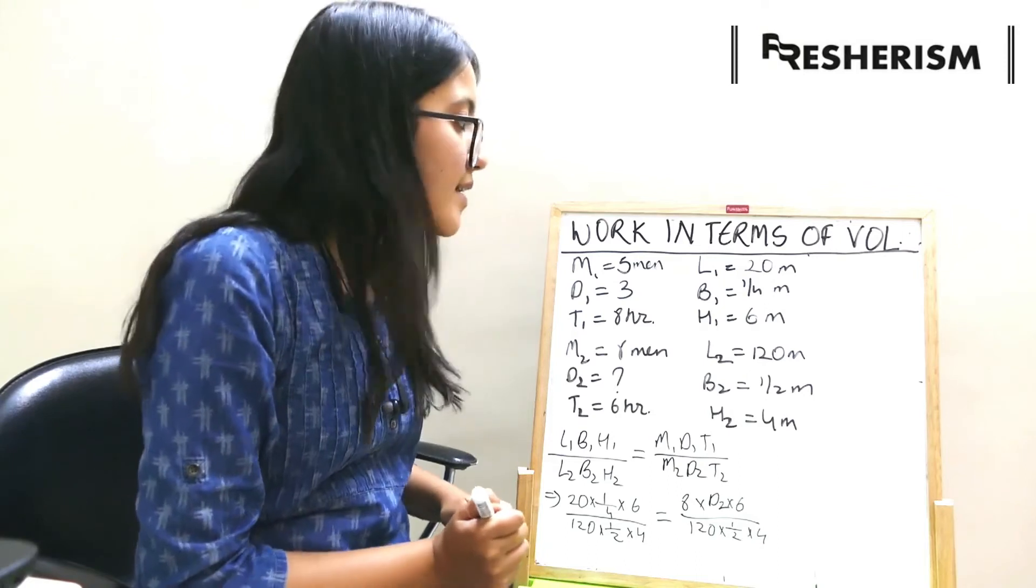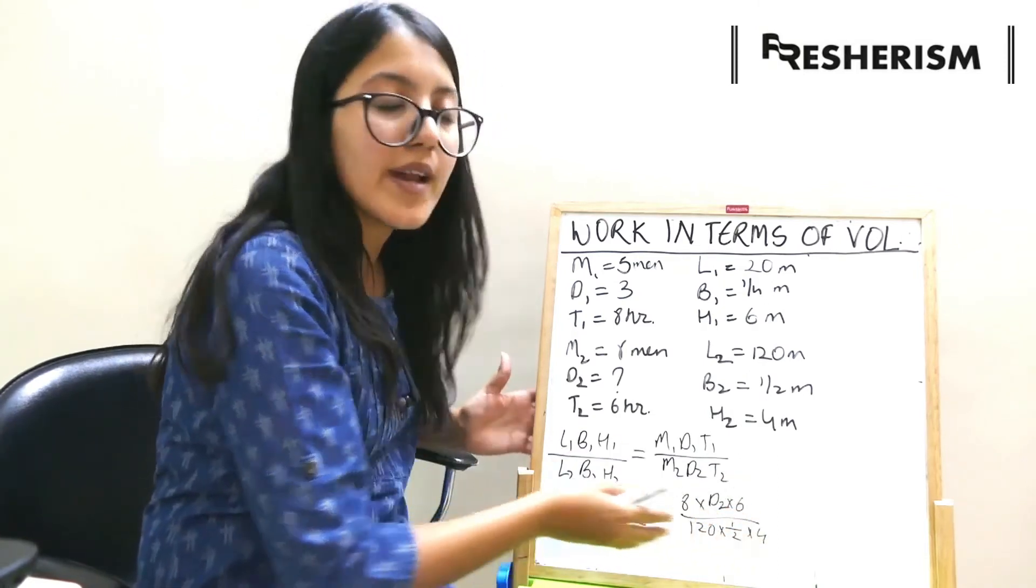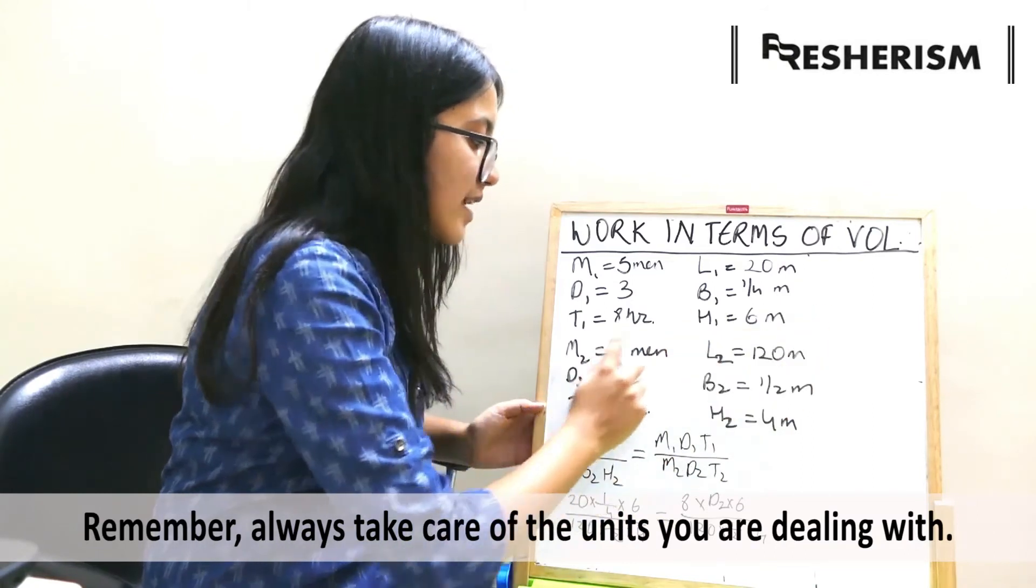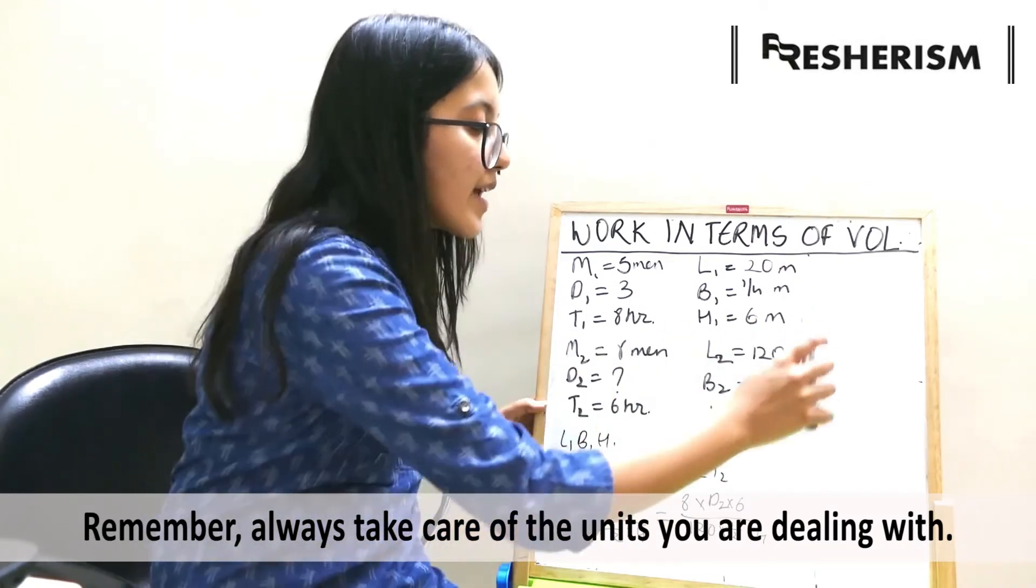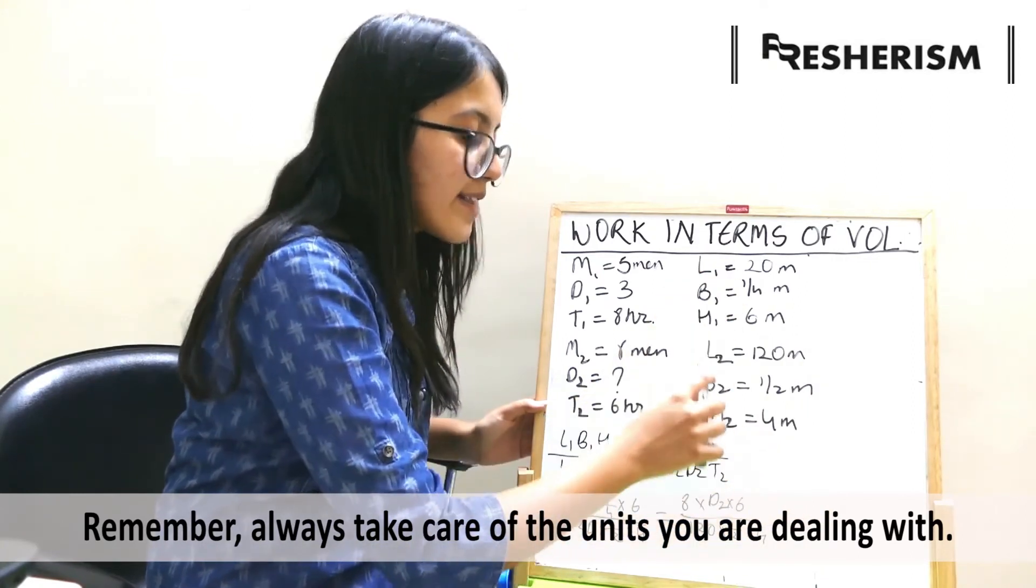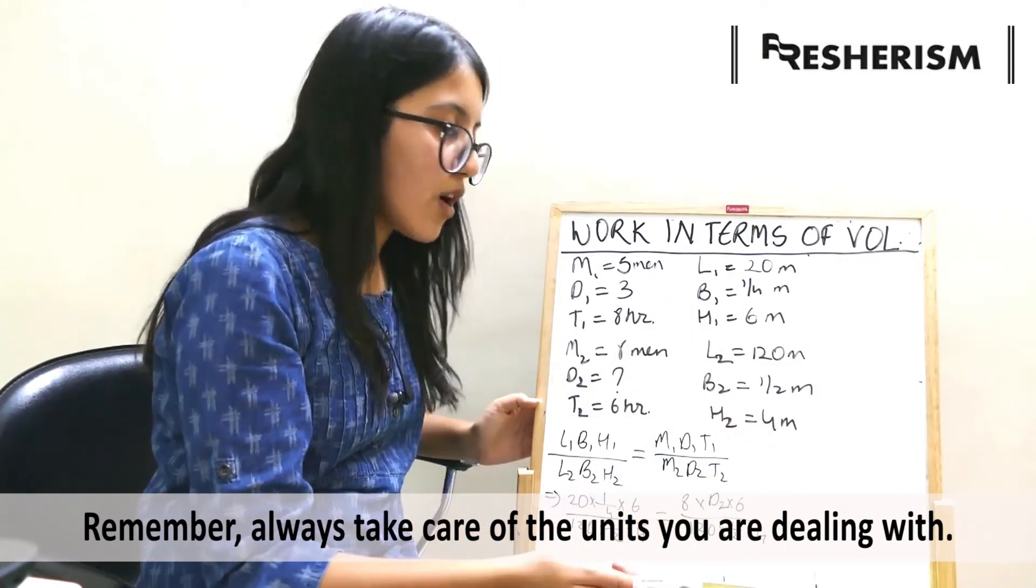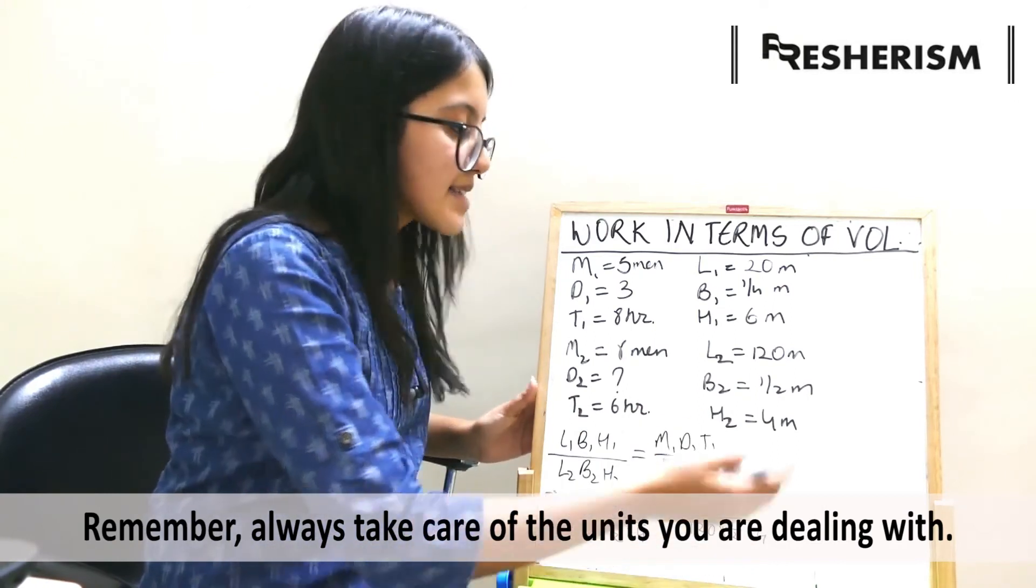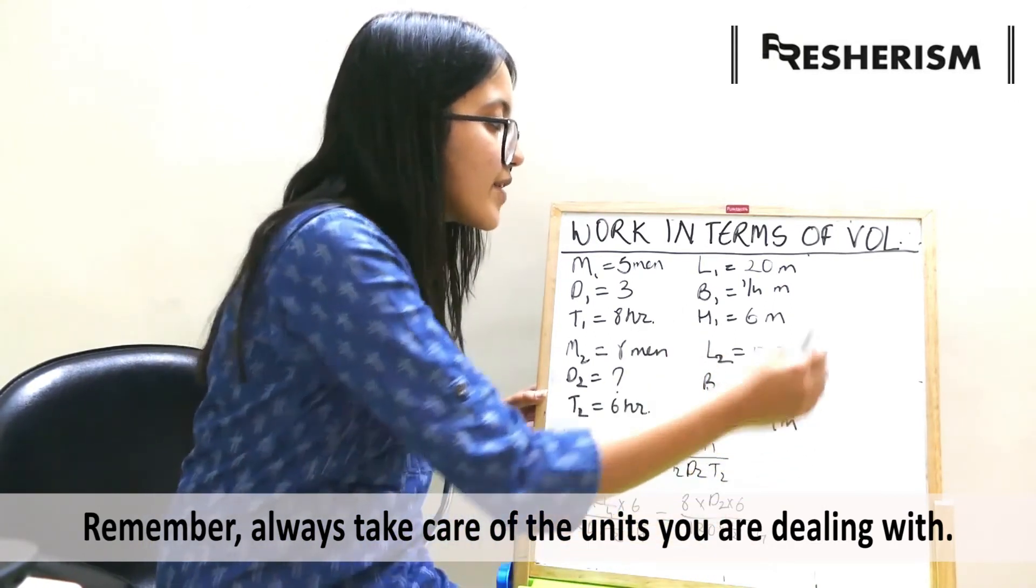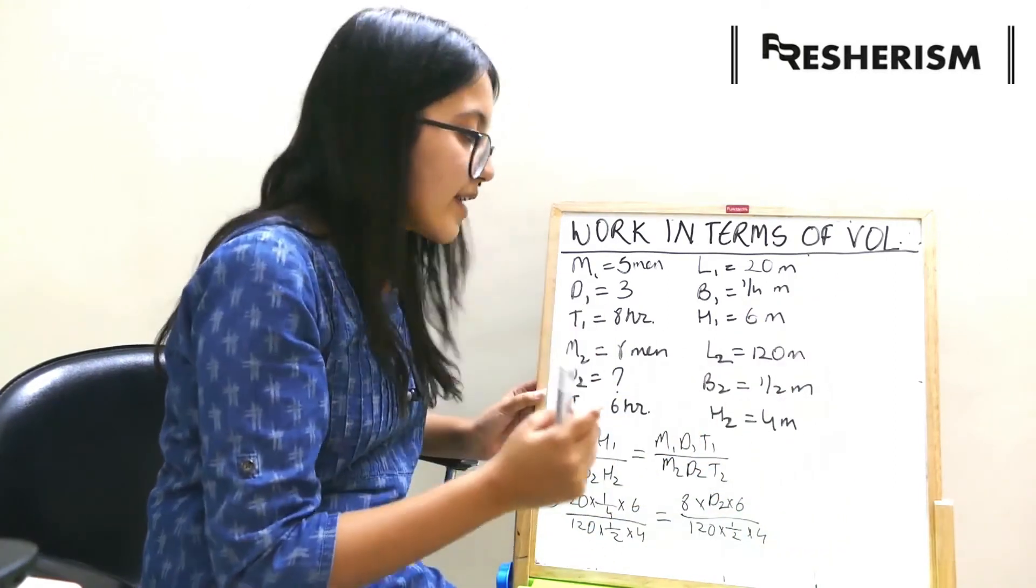We need to keep in mind that whenever we put the numericals in an equation, then all our units need to be same of the similar category. Here, we have meter as all the units for the length, breadth, and height of the wall. If at all it is some other unit, we have to first convert all the given data into one unit.